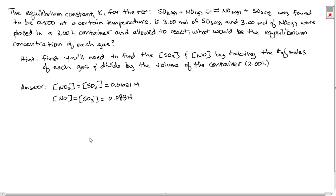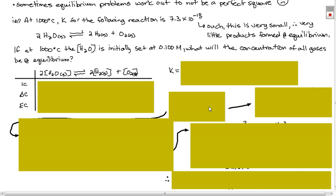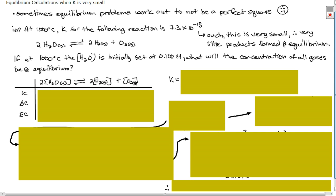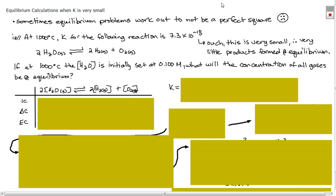Okay, so this was an example where we need to find the final concentration given K and the initial concentration. Let's take a look at an example where K is very small.